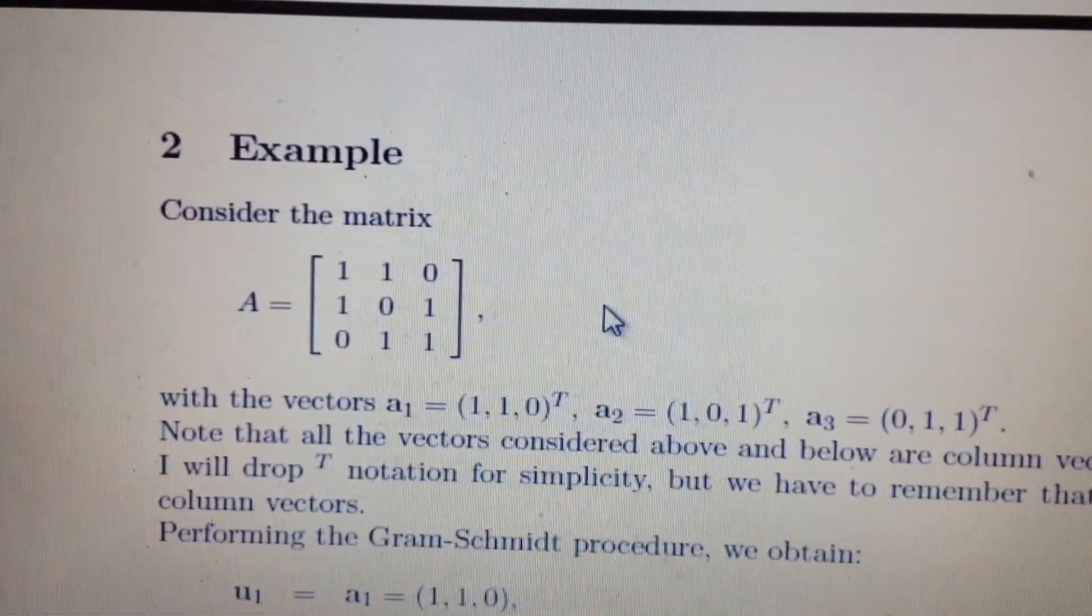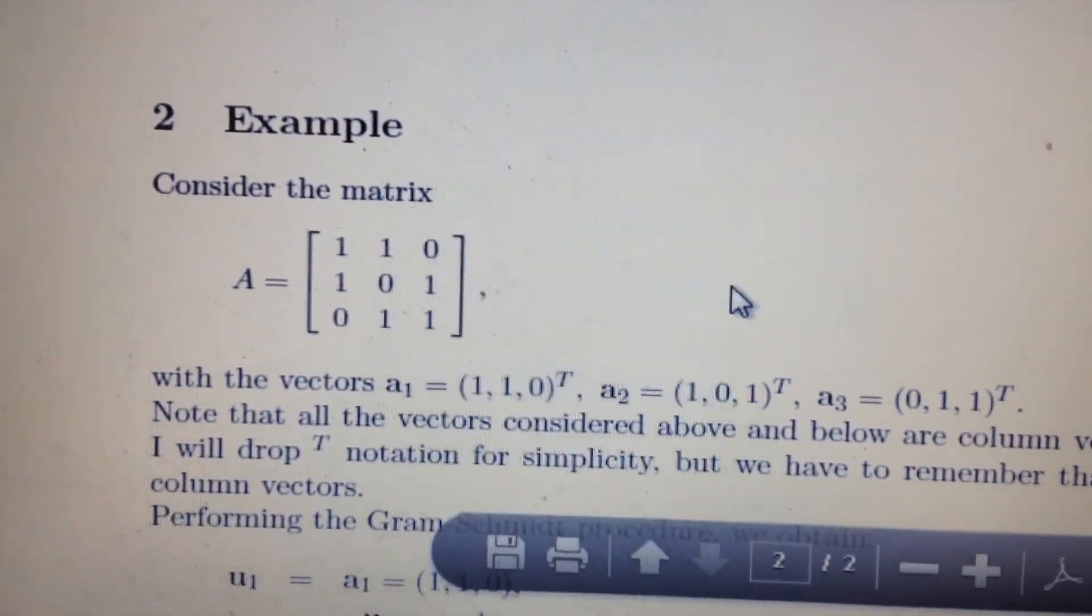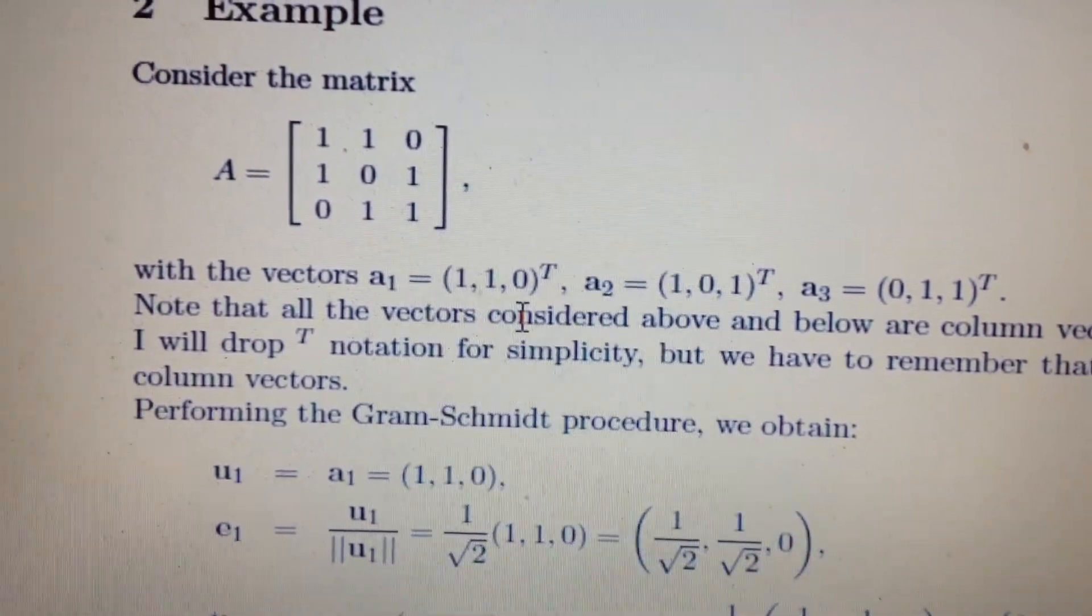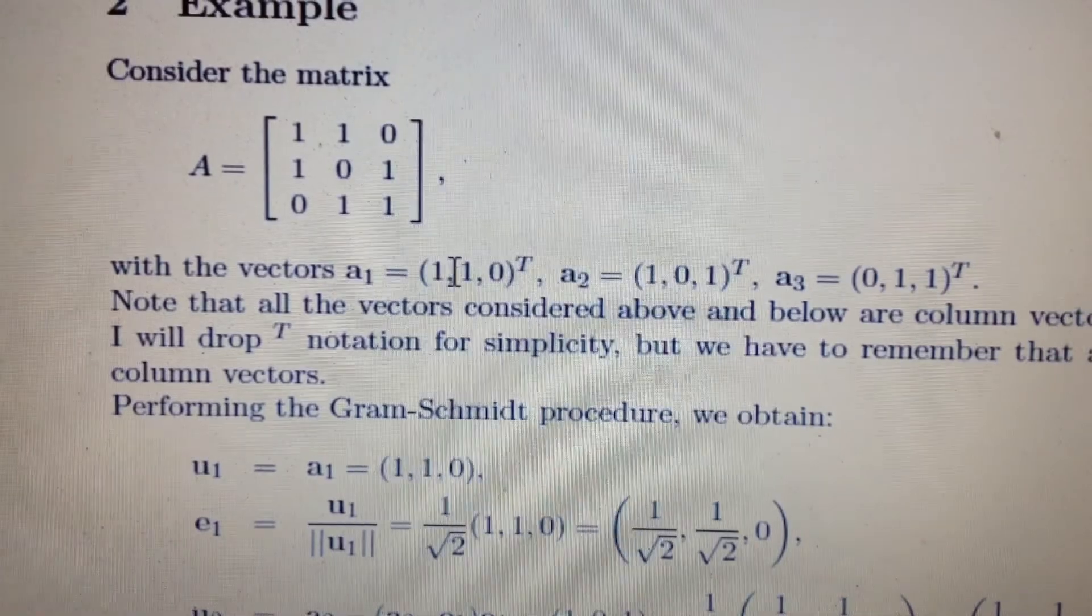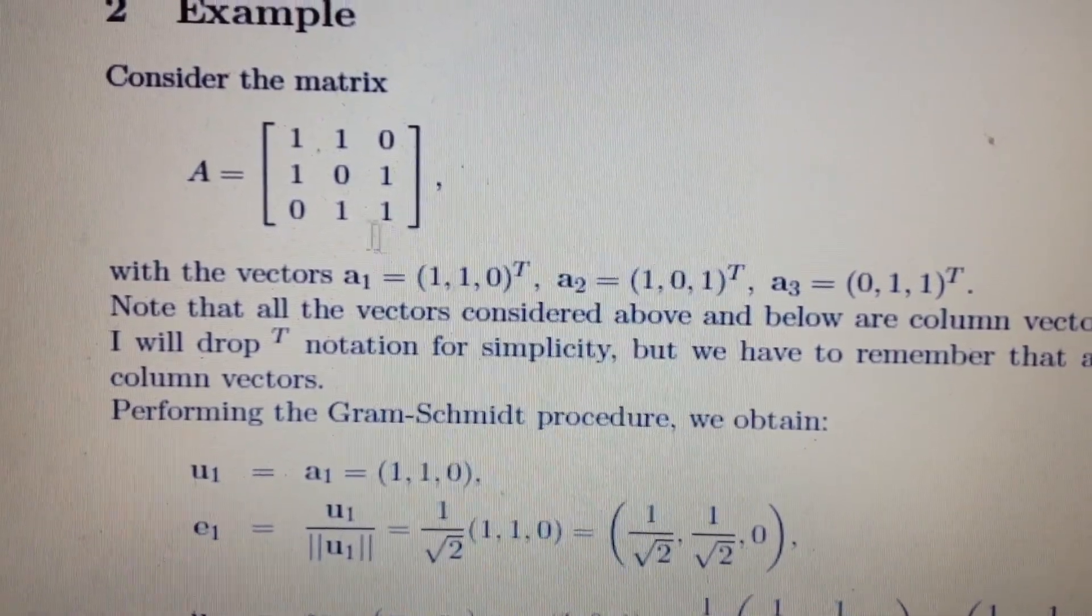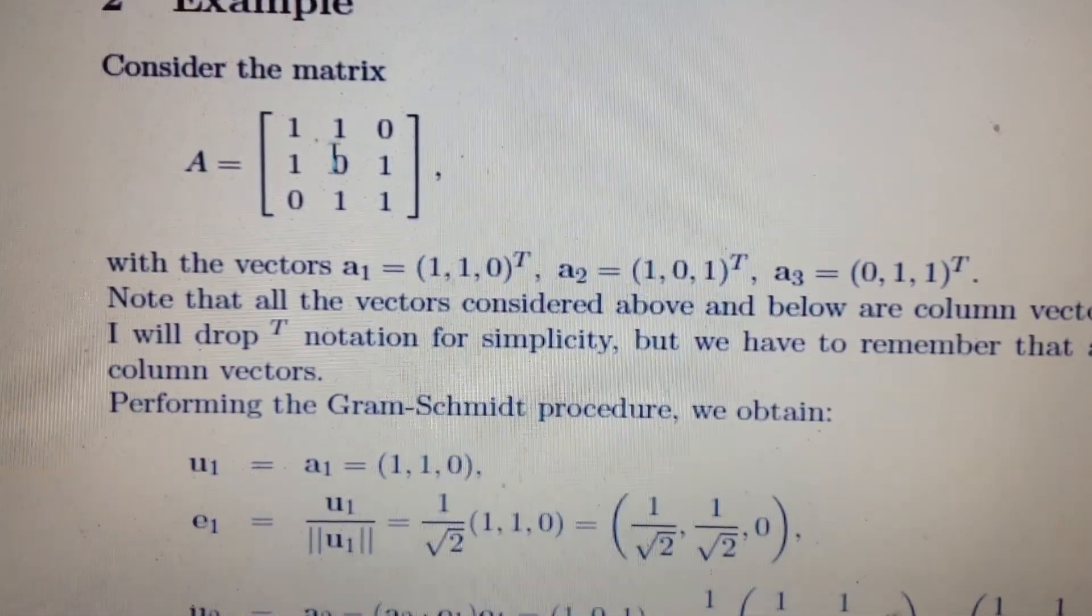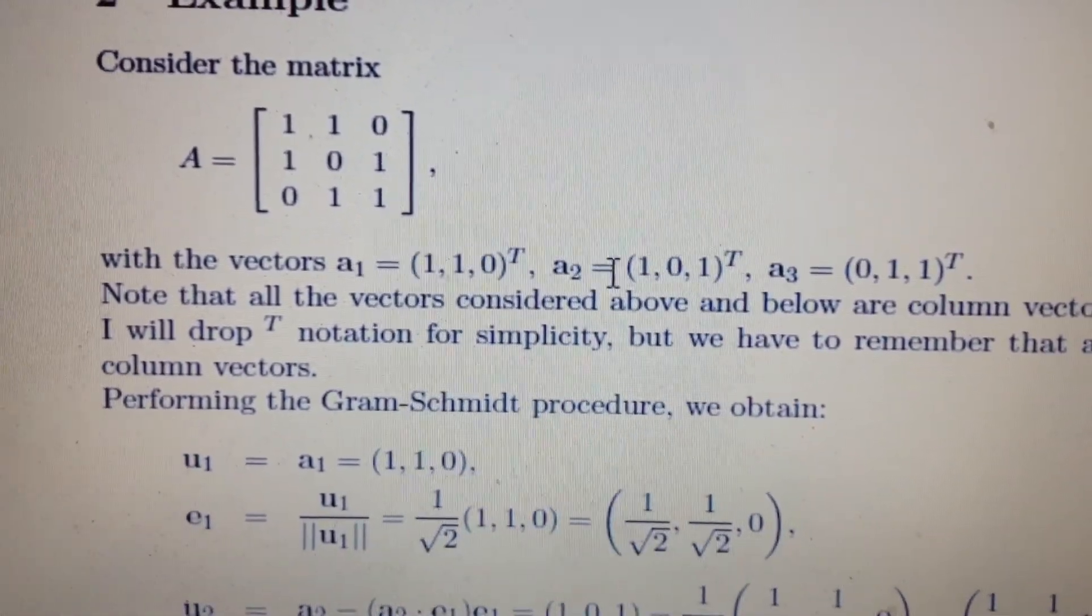Okay, so let's do an example. You have the simple matrix here, the Gram-Schmidt procedure is applied, so you're going to use A1 as (1, 1, 0) and A2 as (1, 0, 1). These are basically the column vectors, and these are transposed notice.